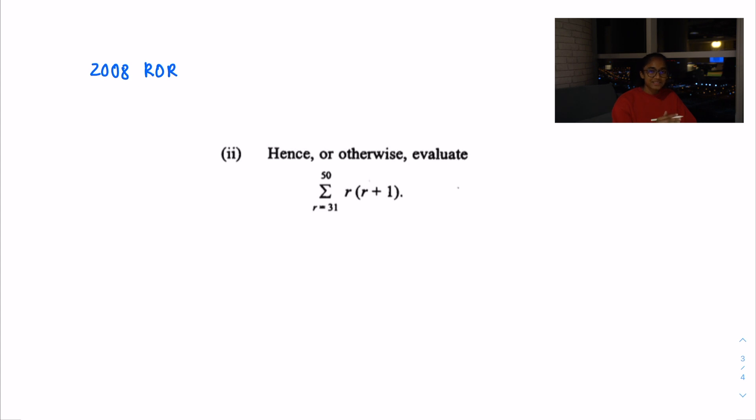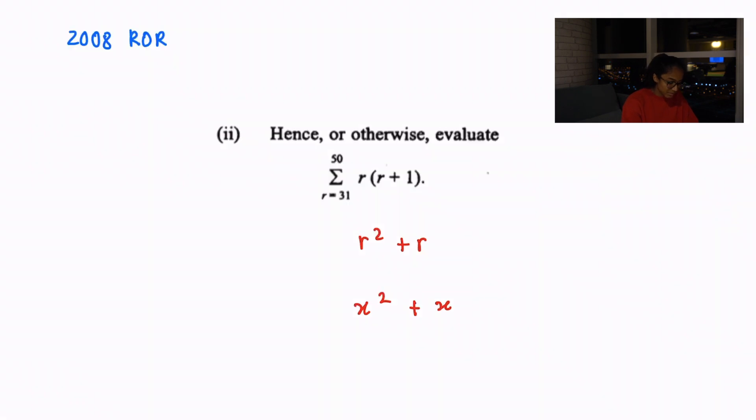So instead of solving it mechanically, we're going to type it in the calculator. But to make our lives a bit easier, we're going to expand the brackets. So all we're going to do is put R by R, and R by 1. So it'll be equal to R squared plus R. And in the calculator, we're going to type in X squared plus X. Okay, so that's how we're going to type it in with our lower limit as 31 and our upper limit as 50. So let's do that.